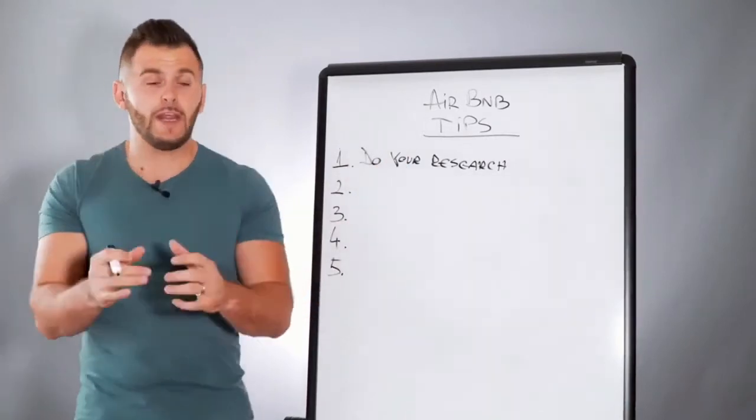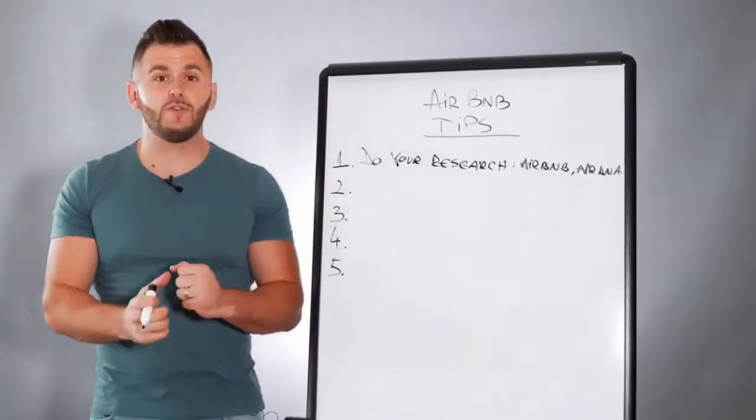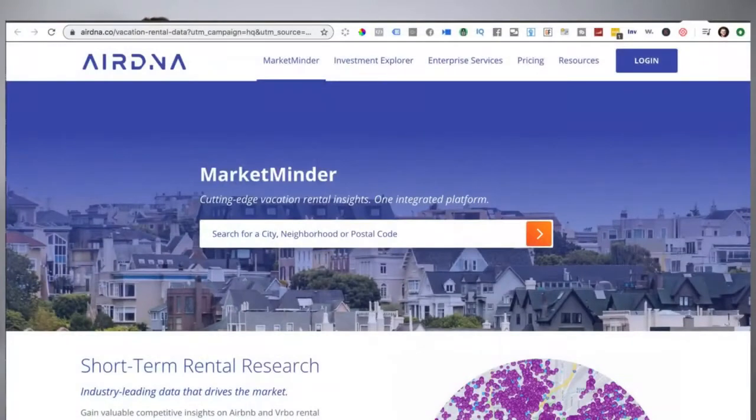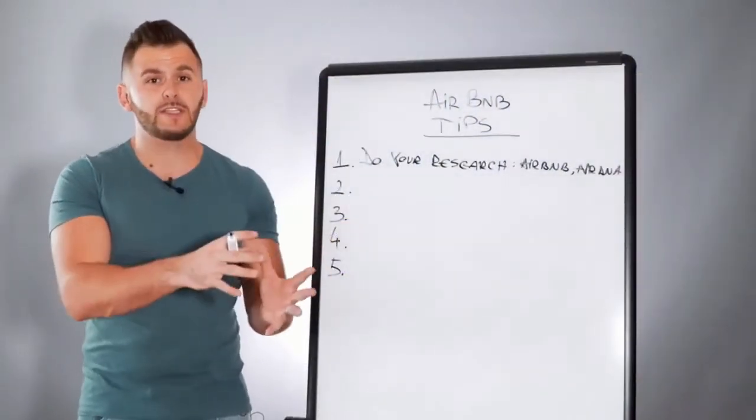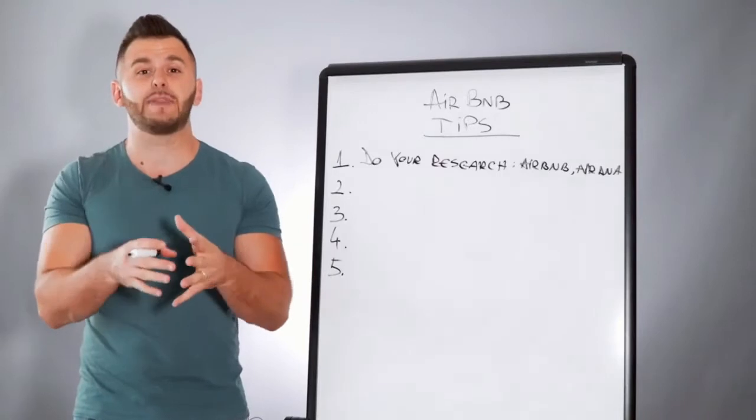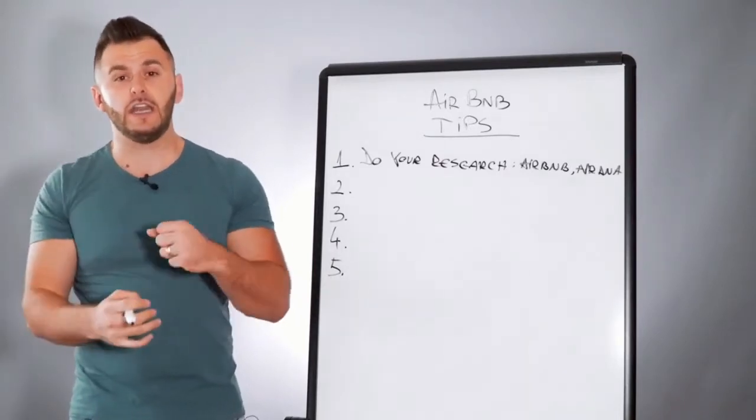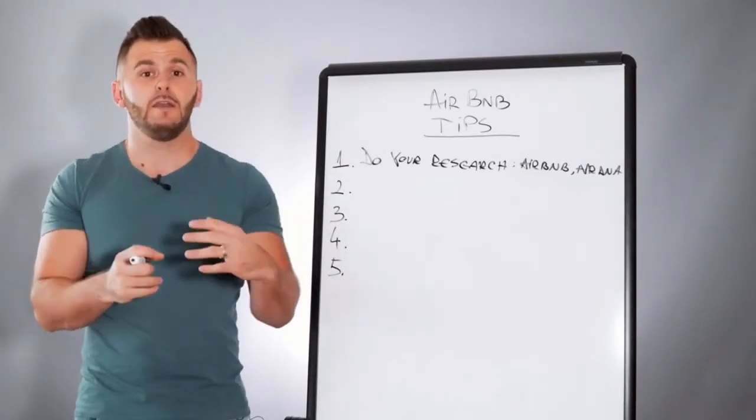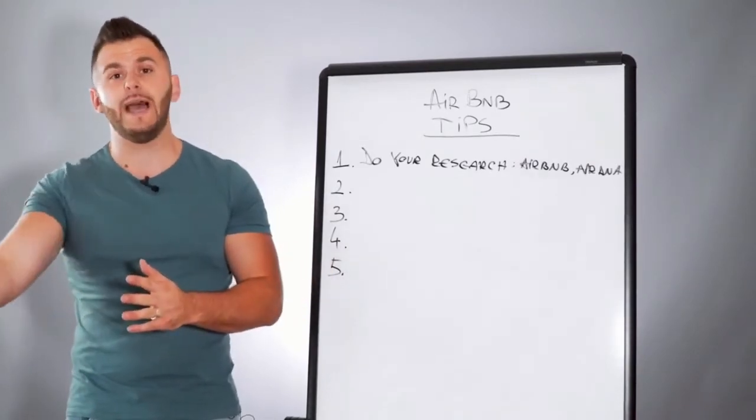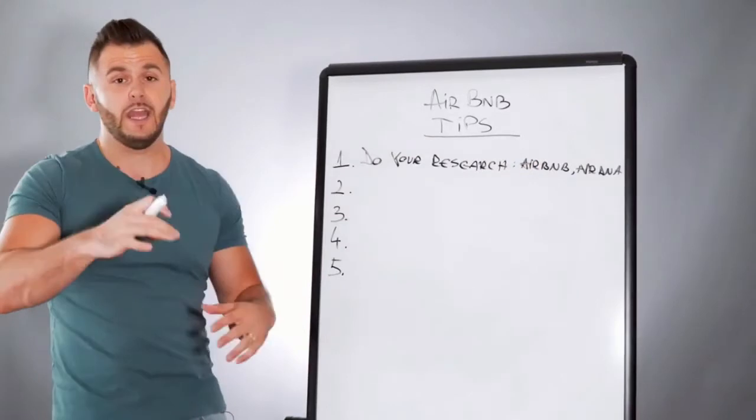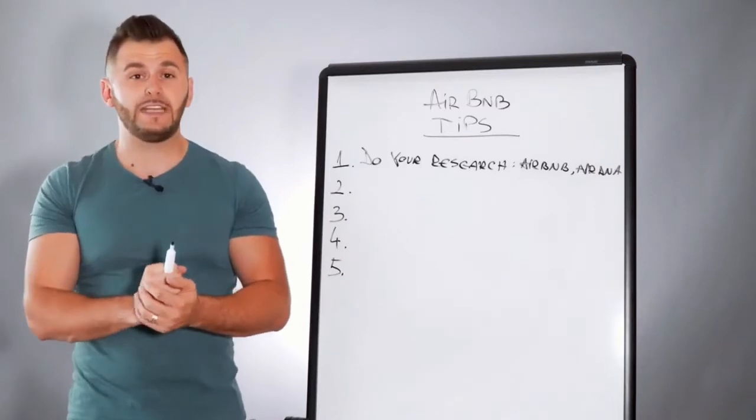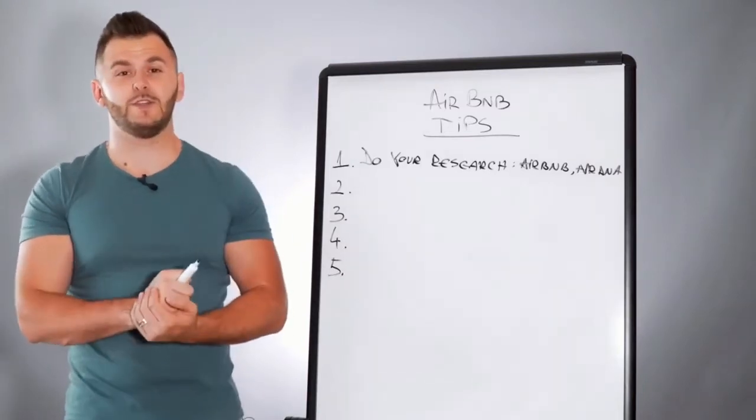So do your research on Airbnb first. So the first place that you want to do your research is Airbnb. The second that you want to do your research is AirDNA. That's an app that's specifically for this type of business. And that app is going to give you some reports and it's going to allow you to do some really in-depth research on what's the potential earning for a property that you want to try to put up for Airbnb. If you're trying to get a one-bedroom place versus a three-bedroom with two baths, it's important to do your research before and don't just jump in.